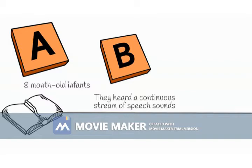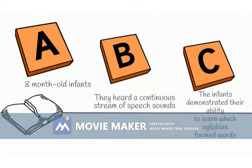In a post-exposure test, the infants demonstrated their ability to learn which syllables formed words by responding differently to three-syllabic sequences that formed a word. After listening to a continuous stream of syllables for only two minutes, without knowing whether words were present in the speech stream, the infants managed to discover the correct underlying structure through mere exposure. Saffran et al., 1996.